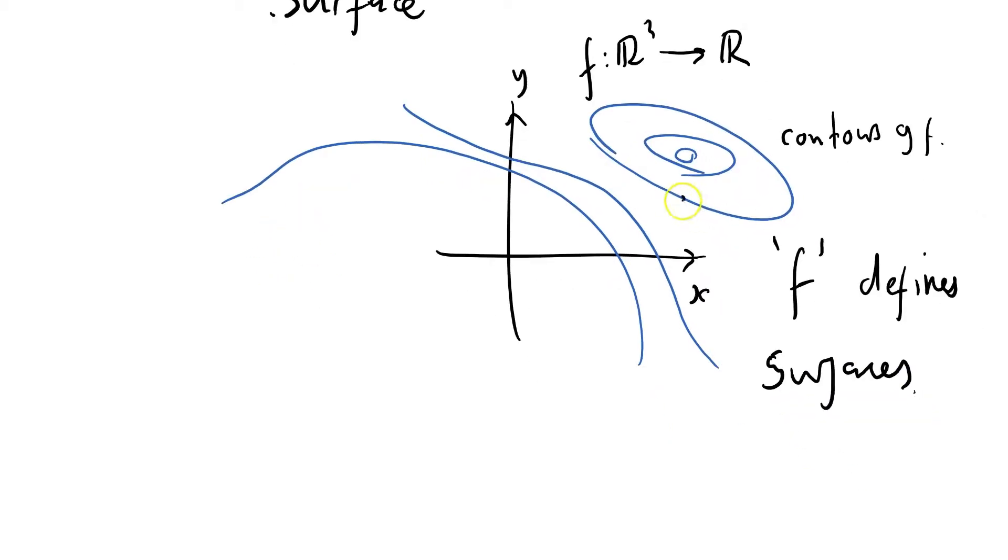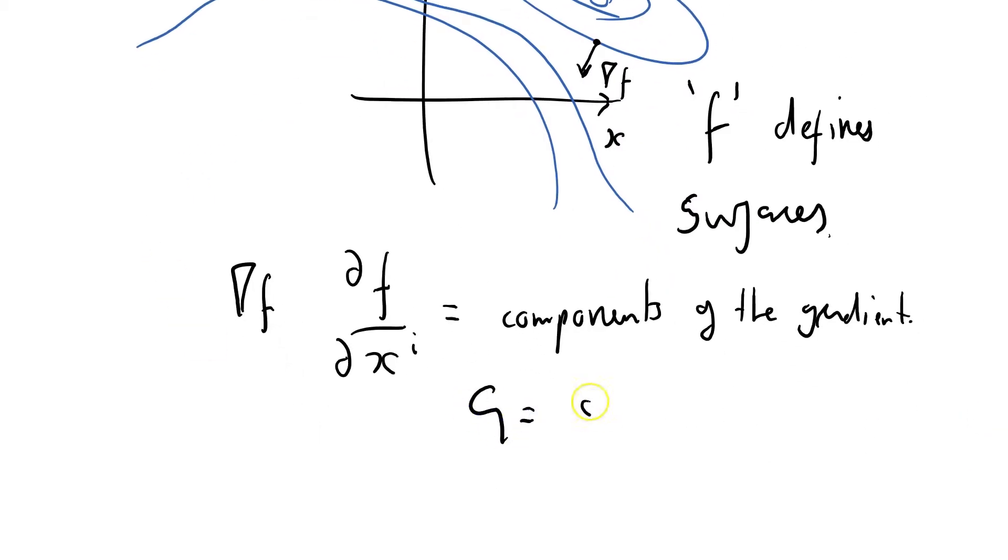But at any particular point here, I can define the gradient of f. And so the gradient of f, which you write like that in vector calculus, of course we will write ∂f/∂xⁱ equals the components of the gradient. And I'm going to write g = ∂f/∂xⁱ. That's a little bit more neatly. gᵢ equals the components of the gradient. And here we've just got two: we've got x and y of the gradient.